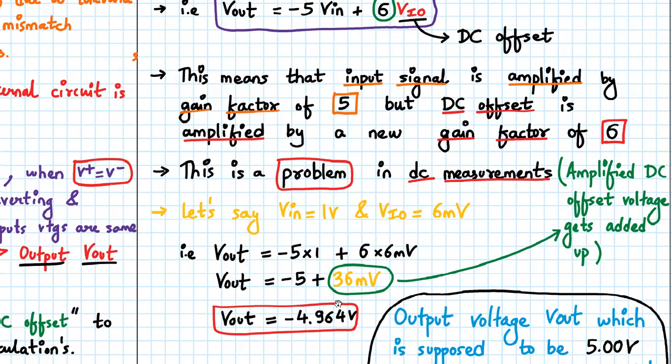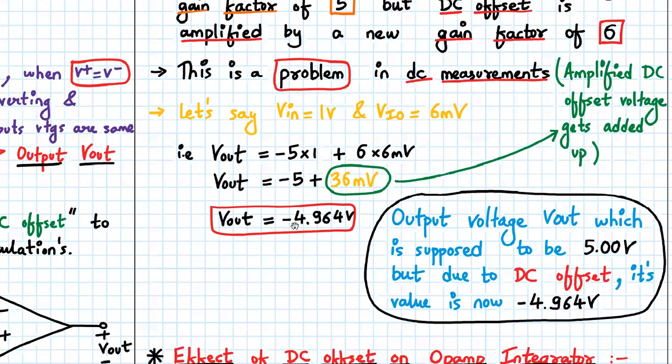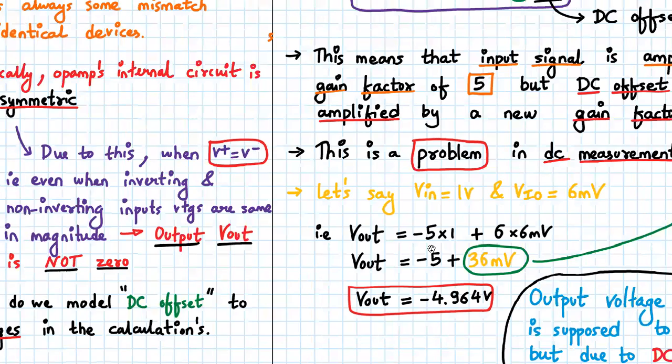This is the amplified DC offset voltage which gets added to the original output. Originally, the output should be -5 volts, but due to this DC error, its value is -4.964 volts. The output voltage, which is supposed to be -5.00 volts, but due to DC offset, its value is now -4.964 volts.